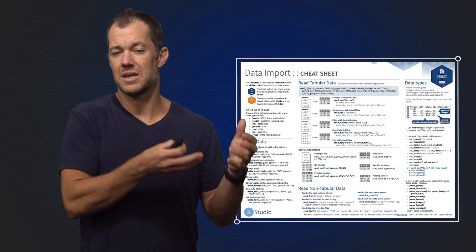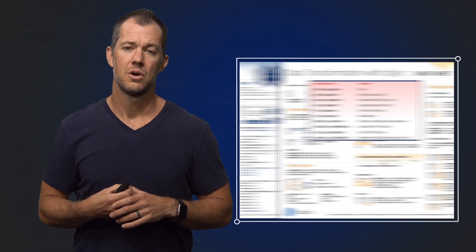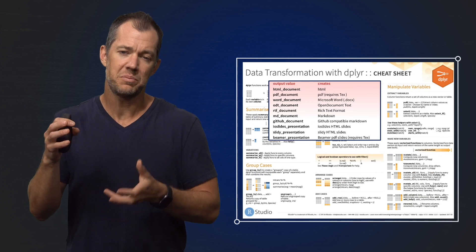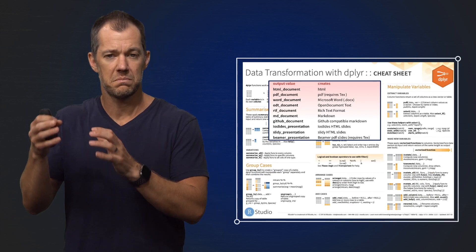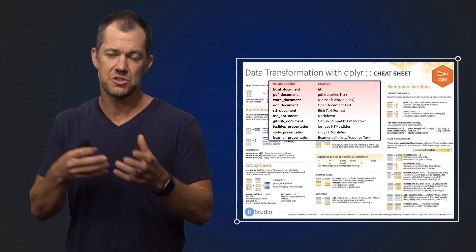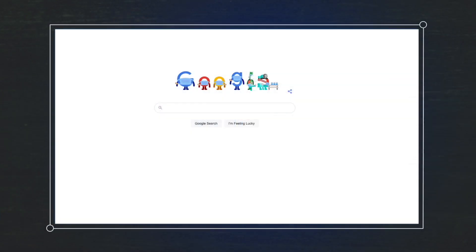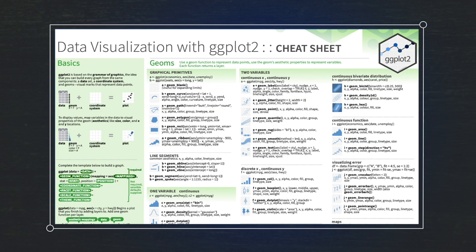You can go to the cheat sheet and get some clues about how to do that. Or if you want to manipulate your data and make it into a certain format, the cheat sheet can oftentimes help. So if you just Google the name of the package and then cheat sheet, this will oftentimes bring up the cheat sheet that you're looking for.